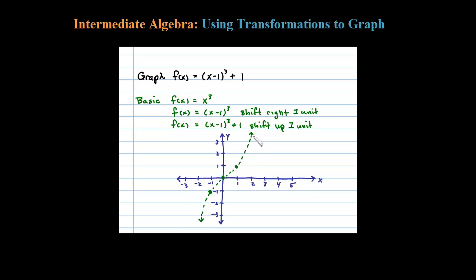Now the first translation is to shift to the right one unit. So we're going to shift all these points over to the right one unit and then connect that up with a dotted line. This is what you'll get.